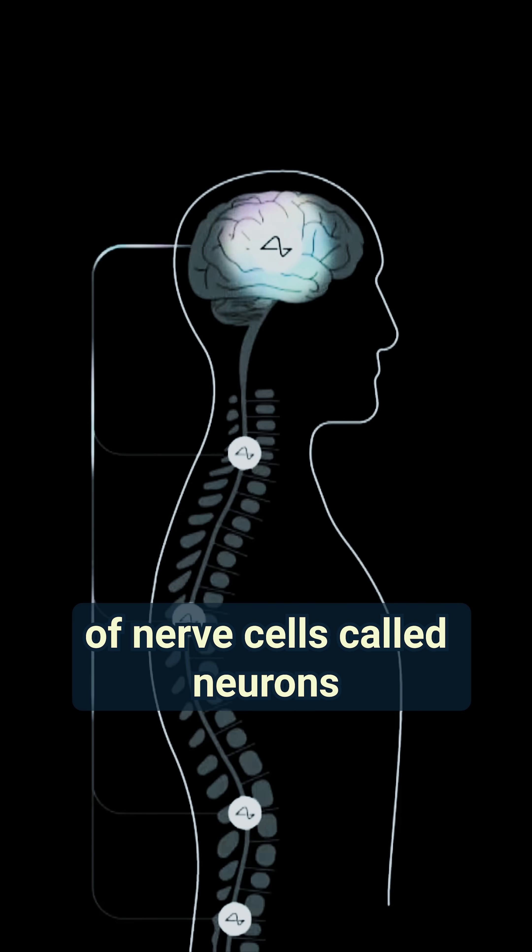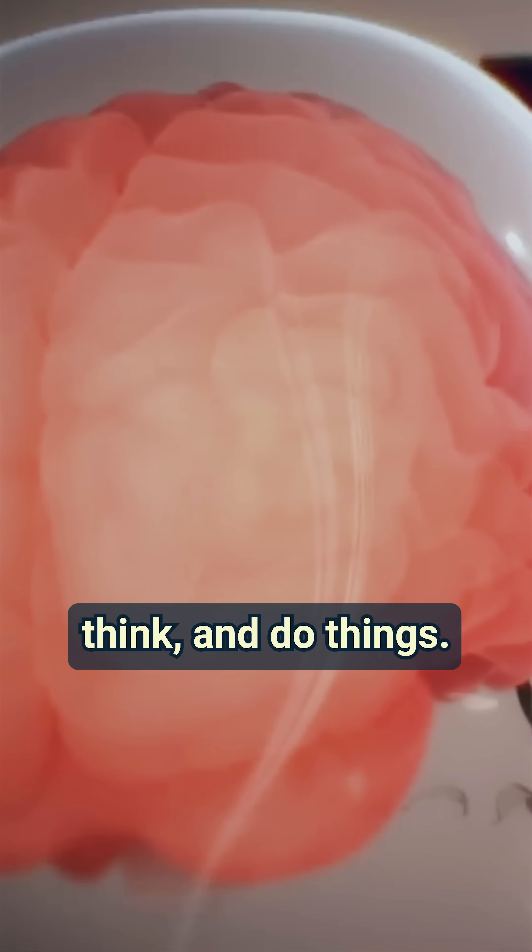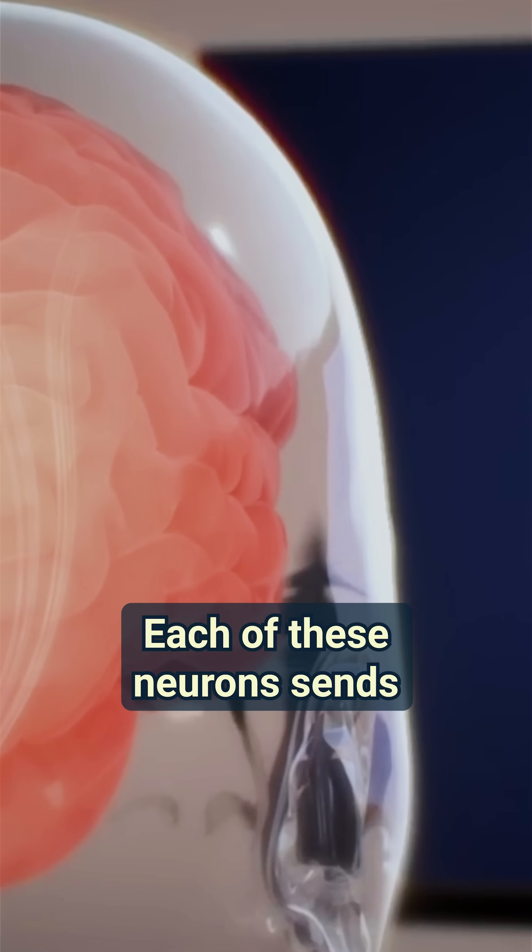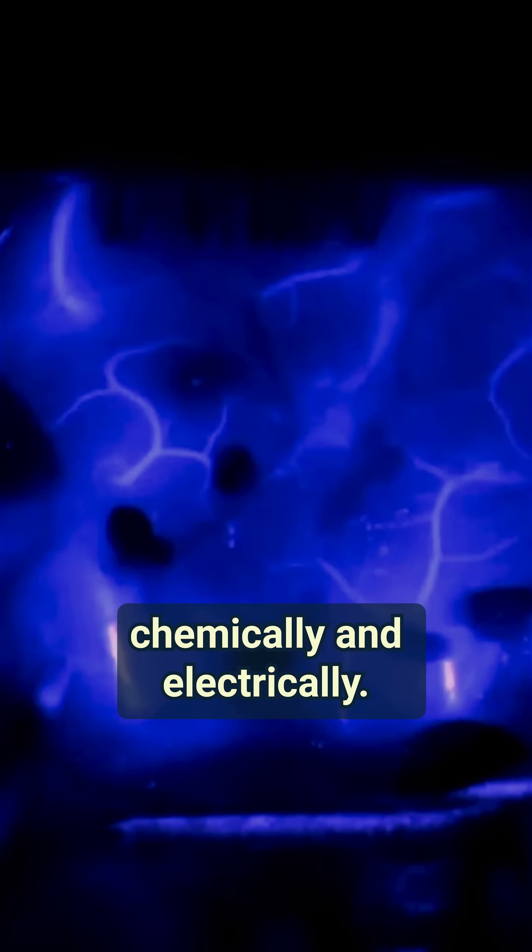Our brains have billions of nerve cells called neurons that allow us to feel, think, and do things. Each of these neurons send and receive information chemically and electrically.